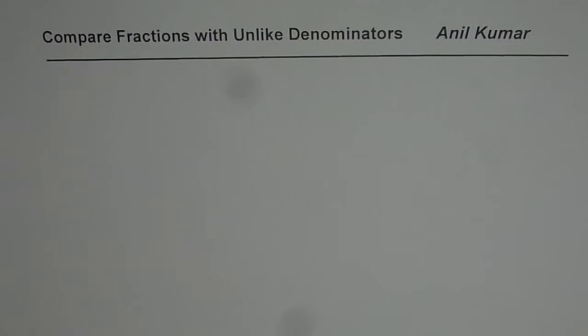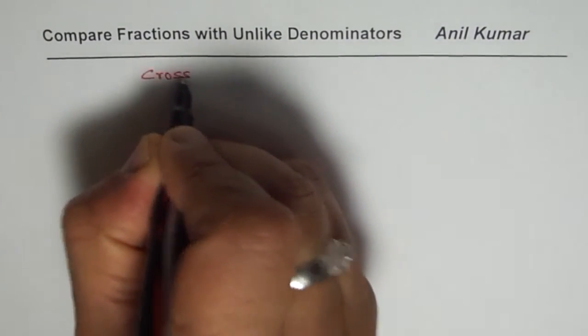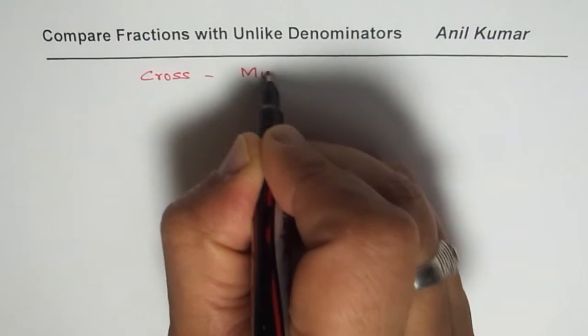I'm Anil Kumar and we are going to master the technique of comparing fractions with unlike denominators in this video. The strategy for us is cross multiplication. So that is the strategy which we are going to use.